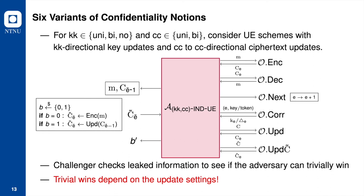The games for these six variants are the same — the adversary and the challenger behave the same. The only change is how the challenger evaluates the trivial win conditions. The trivial wins depend on the update settings. For example, in bidirectional update settings the adversary gains more information, making it seem more likely for the adversary to trigger the trivial win conditions.